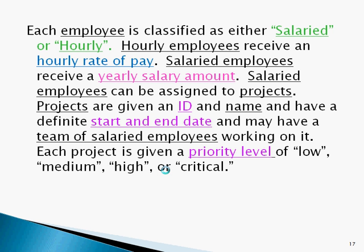Now let's see what needs to be tracked. Again, the underlined words indicate our nouns. The highlighted words are our characteristics or attributes that will be tracked in the database. One point to make is that salaried and hourly are actually values that will be stored in an attribute for the employees. We could replace these two terms with 'classification,' and then the values entered in that field would be 'salaried' or 'hourly.'